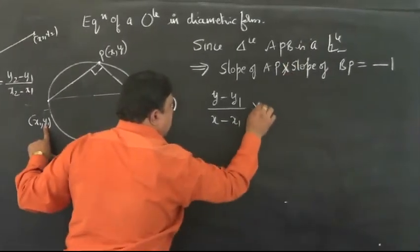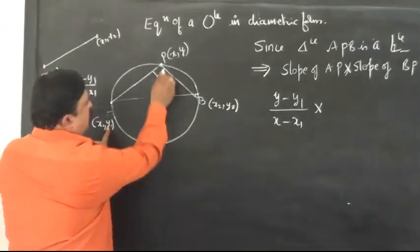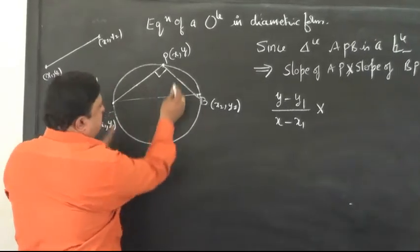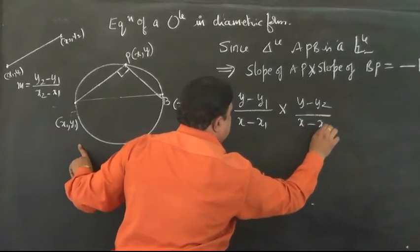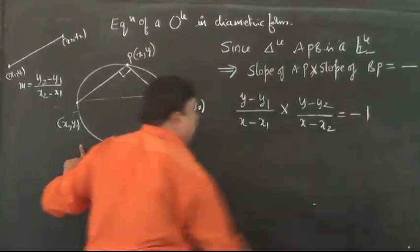Slope of BP: the same formula, Y minus Y2 divided by X minus X2 is equal to negative 1.